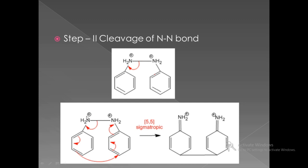To explain the 5,5 numbering: we number from the nitrogen as position one, then two, three, four, five along one benzene ring. Similarly on the other side: one, two, three, four, five. The nitrogen-nitrogen sigma bond starts at the first position — both nitrogens — and is shifted toward the fifth position. Therefore this reaction is stamped as a 5,5-sigmatropic rearrangement.